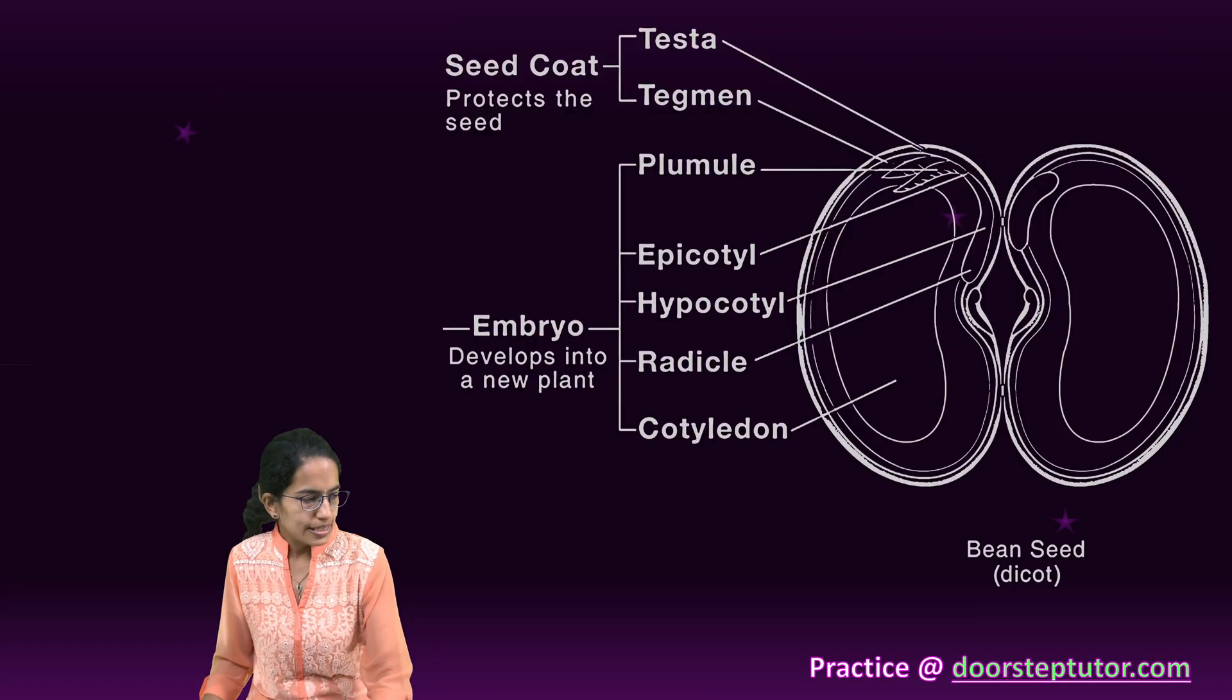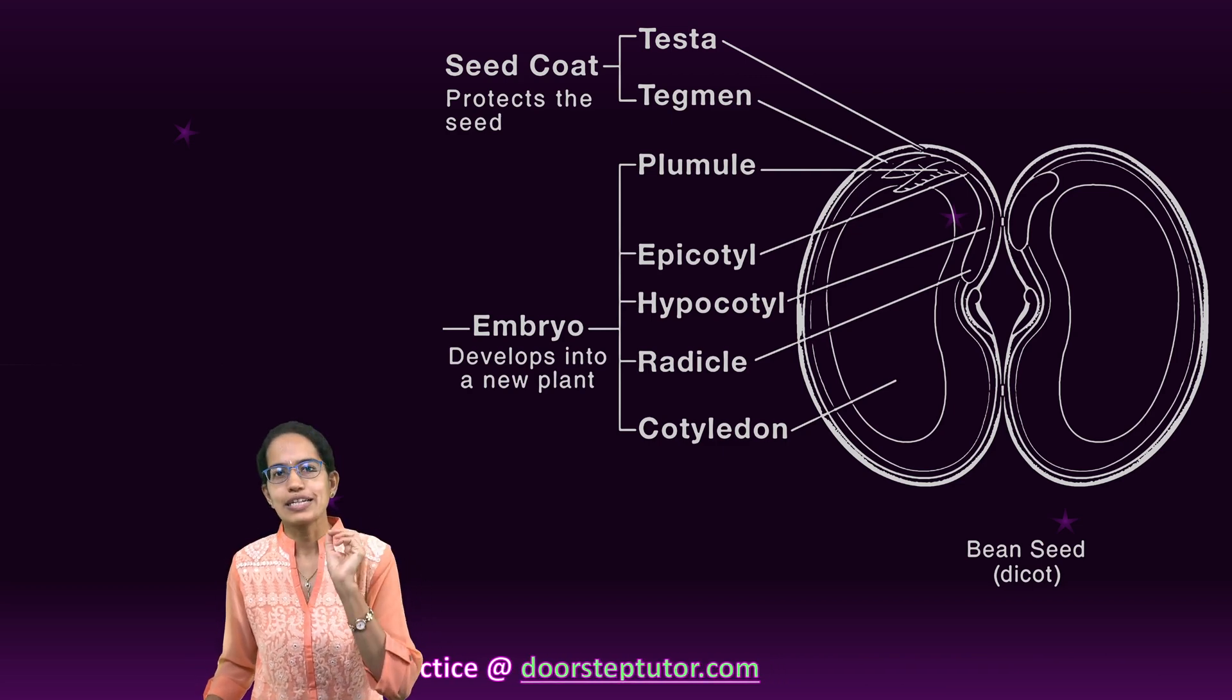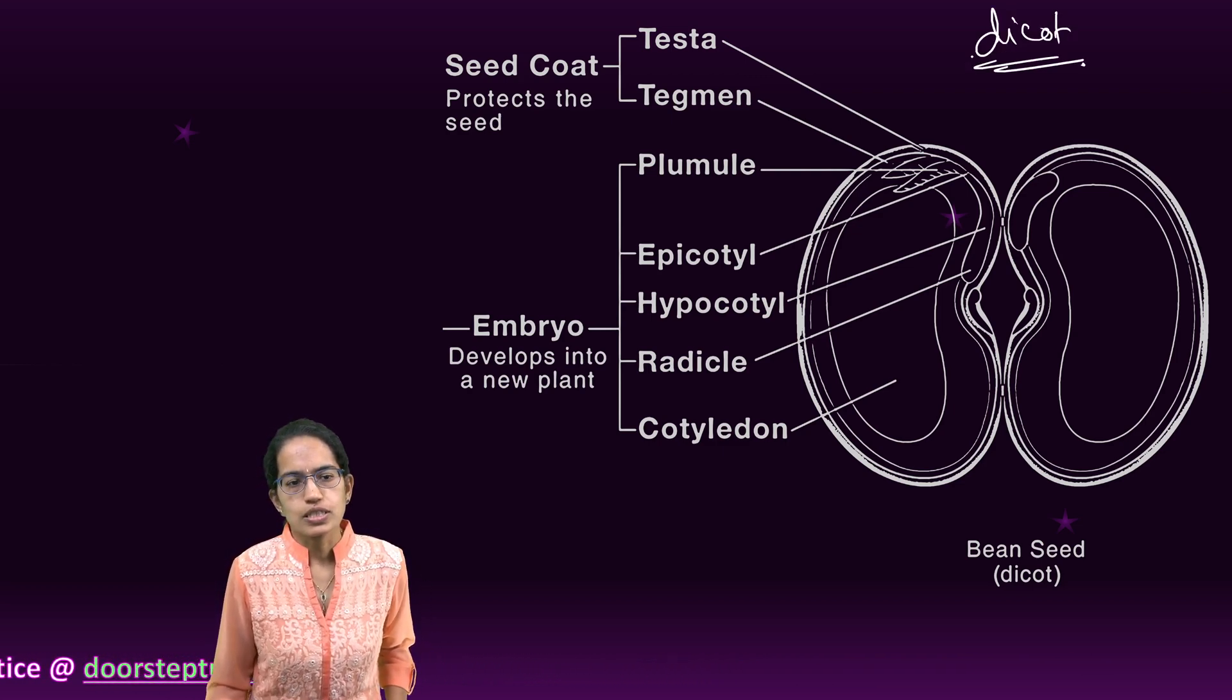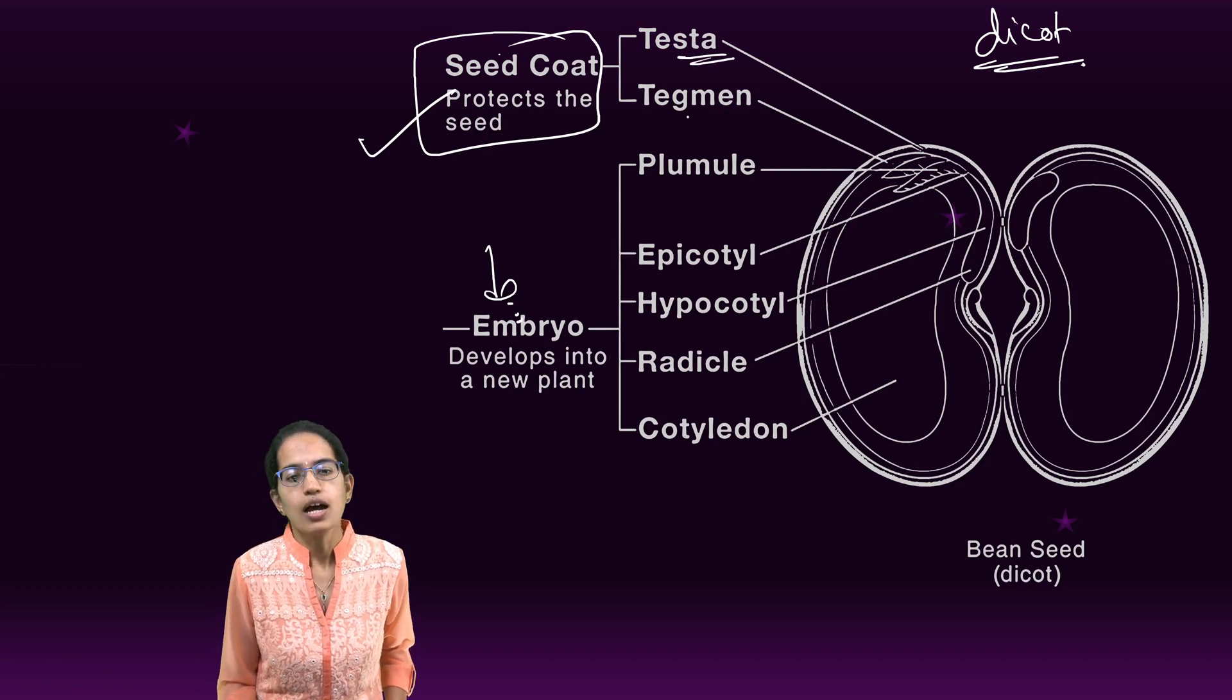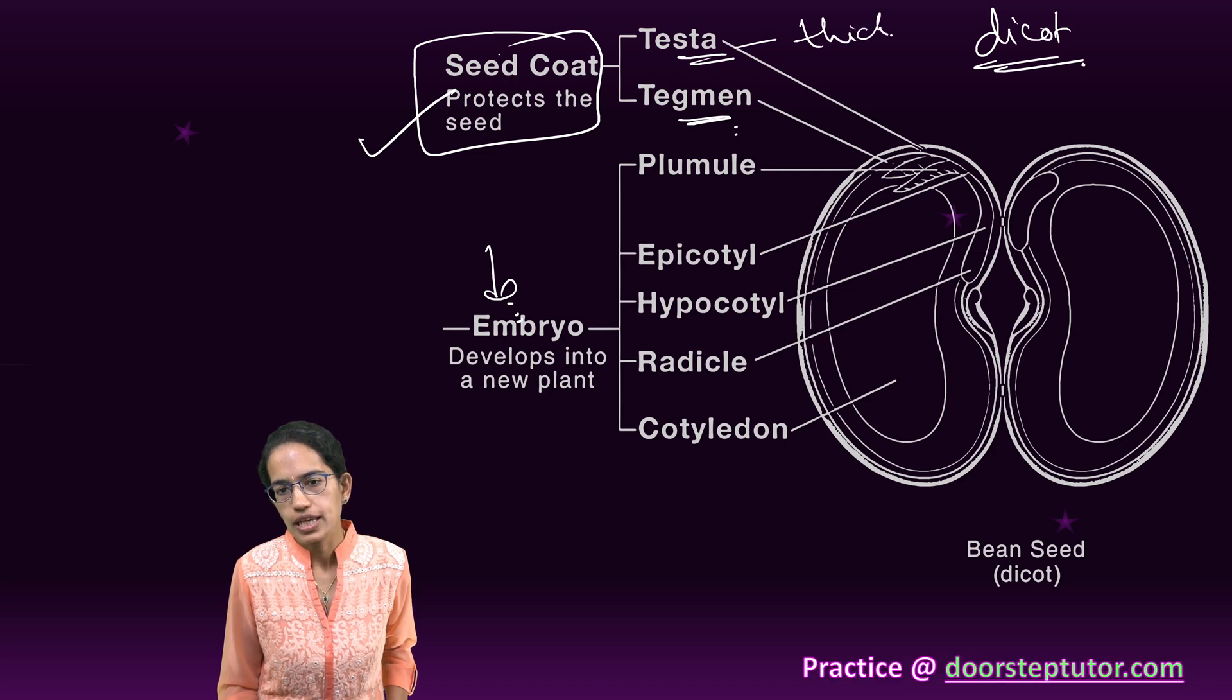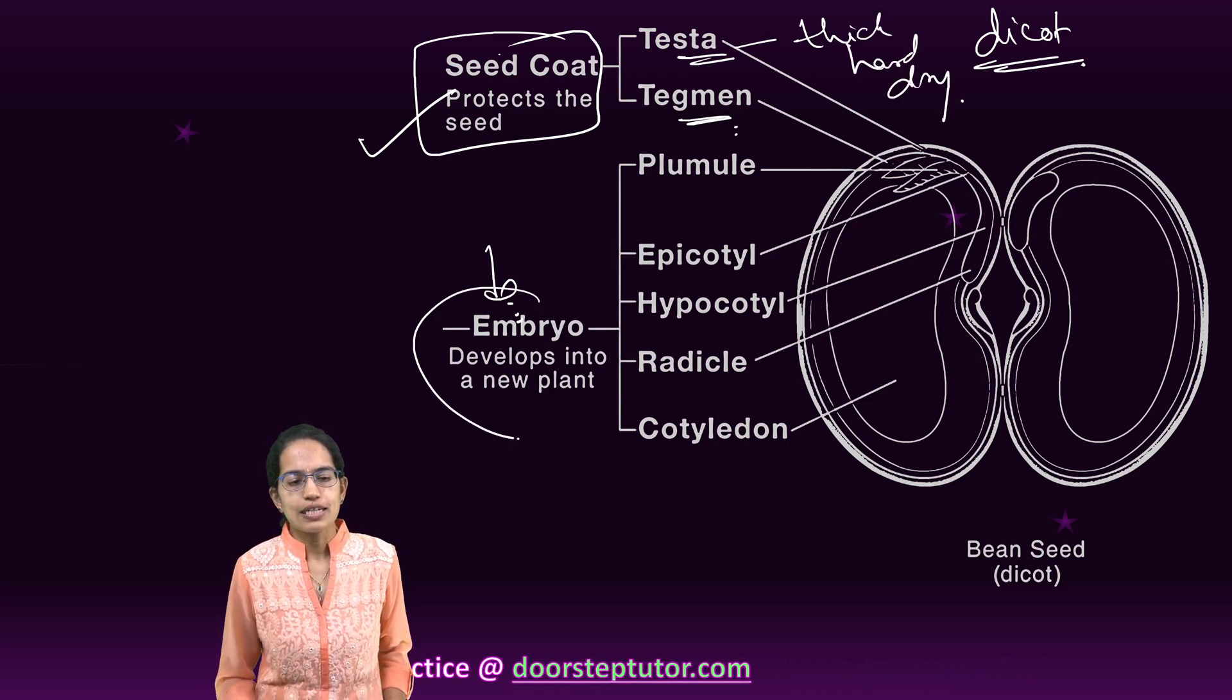Now in this section we would first understand the structure of a monocot and a dicot seed. To begin with a dicot seed. In the dicot seed, the outermost layer which protects the embryo is known as the seed coat. The outer layer is the testa. The inner layer is the tegmen. Testa is relatively thick, hard and dry.